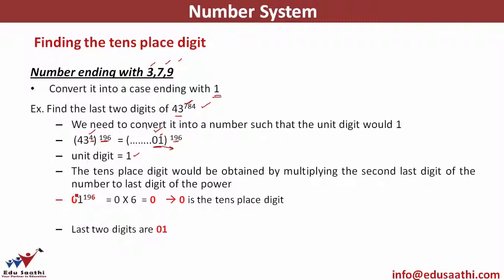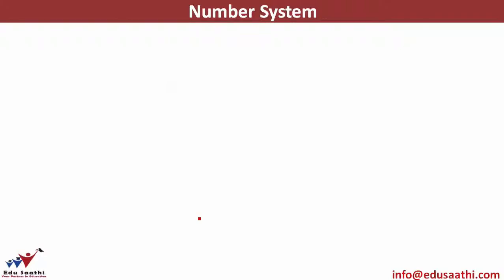The tens place digit is obtained by multiplying the second last digit, which is 0, with the last digit of the power, which is 6. So I'll do 0 into 6, which is 0 — that's the tens place digit. So the last two digits will be 01. Only the last two digits of 43 raised to power 4 are needed; I would not find the exact value.